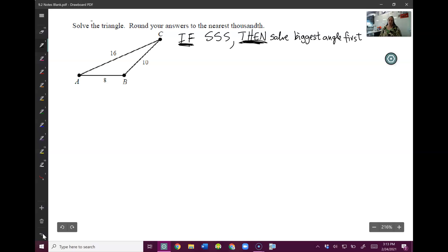That is the number one rule with side, side, side. We need to solve for the biggest angle first. How do we know it's the biggest angle? It'll be across from the biggest side. So here's my biggest side, go across. So capital B is my biggest angle, so that is the first one I'm going to solve for.